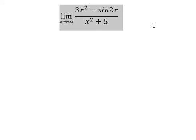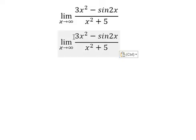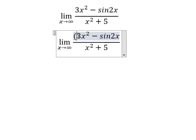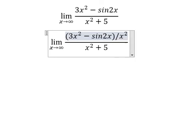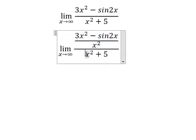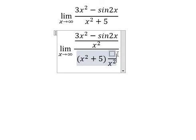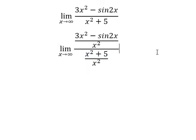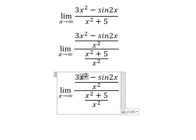We divide by x² on numerator and denominator. So this one divided by this one, we have 3x² - sin2x divided by x², similar for the denominator x² + 5 divided by x².